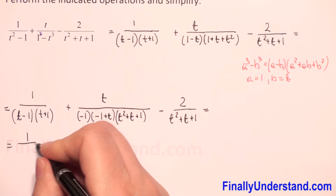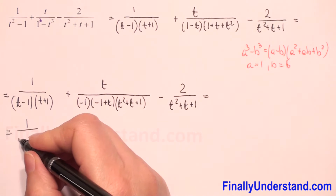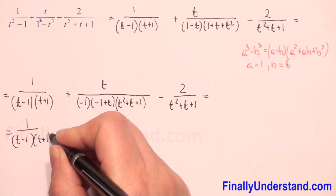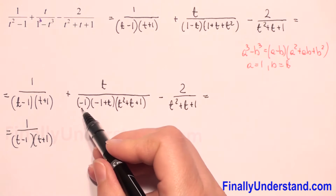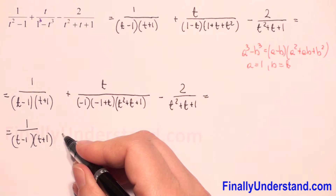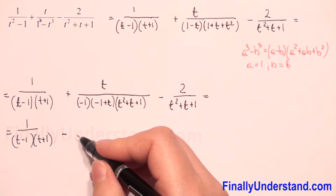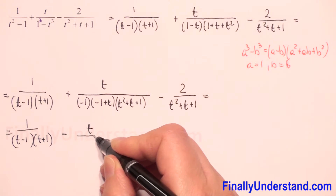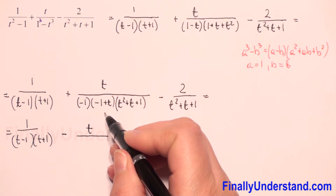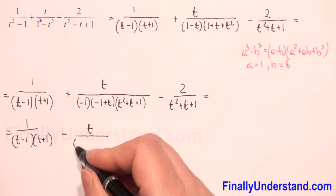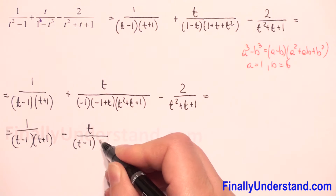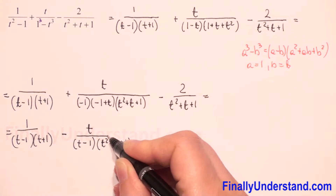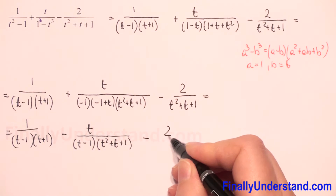So we copy the first fraction: one over t minus one times t plus one. And then we have negative, so it becomes negative t over t minus one times t squared plus t plus one. Then minus two over t squared plus t plus one.